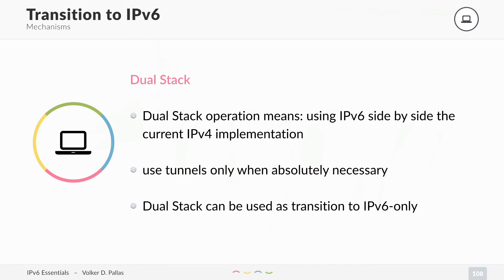This is for a time when IPv6 is so common that every service on the internet uses IPv6, and only some still have IPv4 additionally. So until then, you can use dual stack, which means you configure IPv4 and IPv6 on your router.